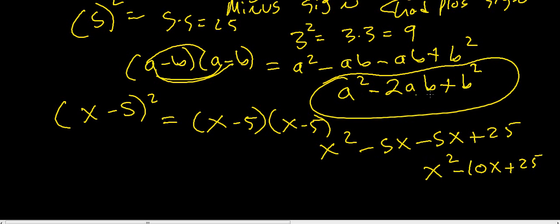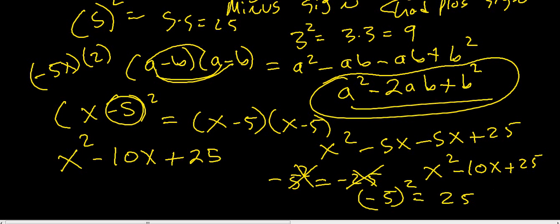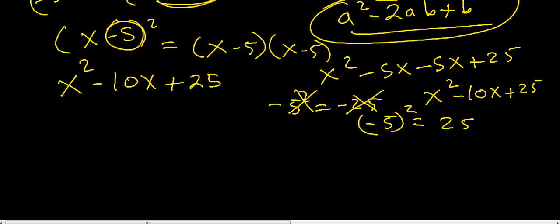Or you can take our formula that we came up with. Square your first term, which would be x squared. Multiply these together and double it. So x times negative 5 is negative 5x. Negative 5x times 2 is negative 10x. Then square this last term here. So negative 5 times negative 5 is plus 25. Be careful. If you put it in your calculator this way, you will get negative 25, which is wrong. Put it in your calculator this way. Just keep that in mind. A lot of people make that mistake.